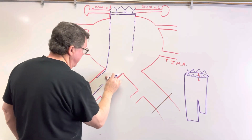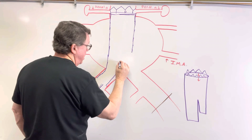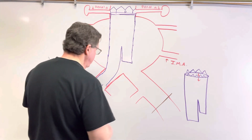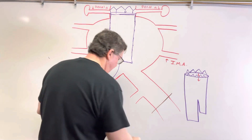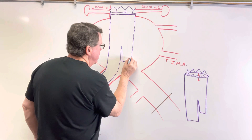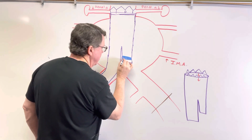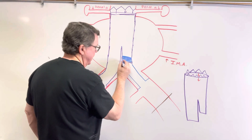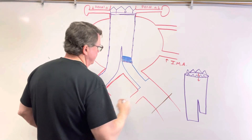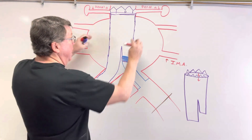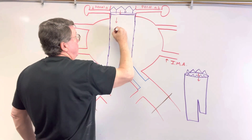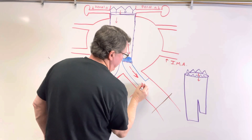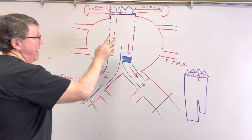The graft comes down into the aneurysm and can be anchored down into the iliac arteries. We have a short leg on the other side, so they come over from the other femoral artery with a guide wire and attach the other limb to complete that shorter leg. It's not solid — blood can still flow through it. Now the blood comes down through the graft into the legs, bypassing the aneurysm sac. That's how the endovascular aneurysm repair works.